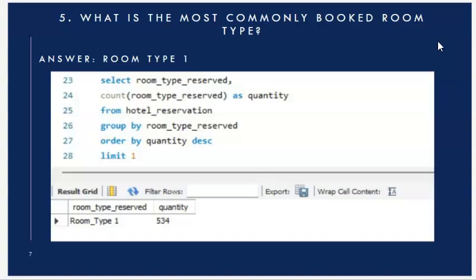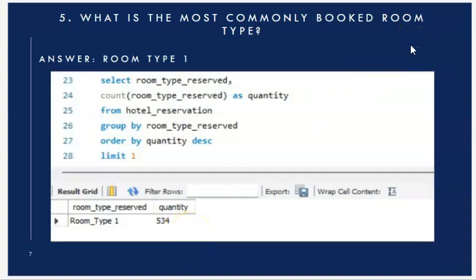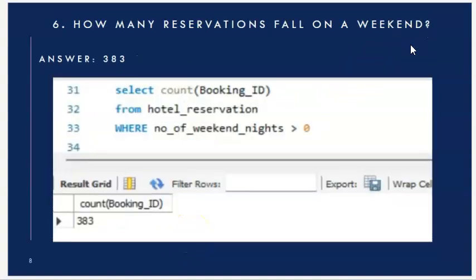Next question: what is the most commonly booked room type? I counted the room type column, grouped by room type, ordered by quantity descending, and used LIMIT 1. The most commonly booked room type is Room Type 1 with a quantity of 534.